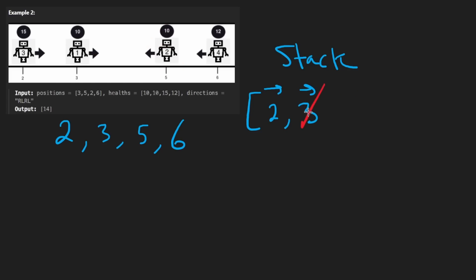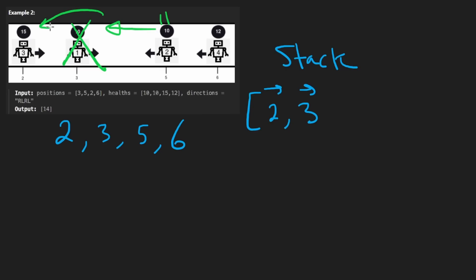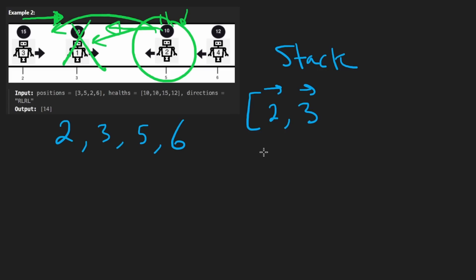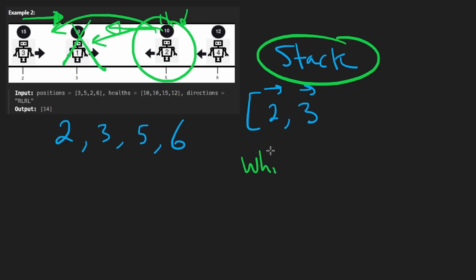Now imagine if this was 11 versus 10 — we'd get rid of the one with health 10, but this one is still moving to the left and the top of the stack is still moving to the right. So a single robot might not just collide with one robot — it might collide with multiple. Therefore, when we are popping from the stack, we're going to need a while loop, not just an if statement.